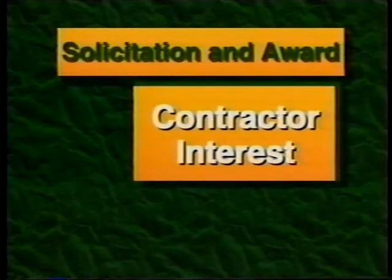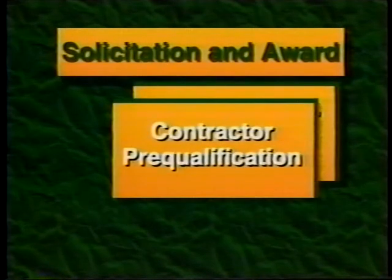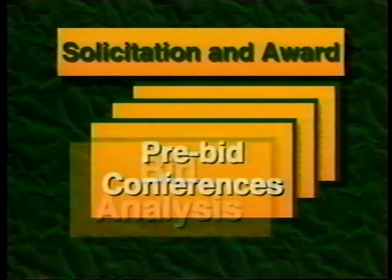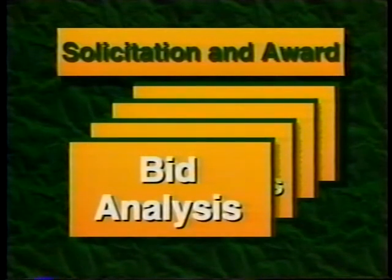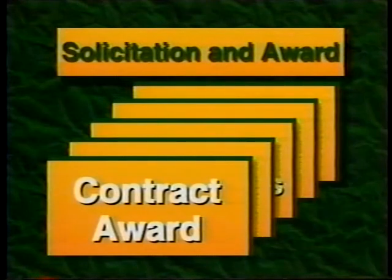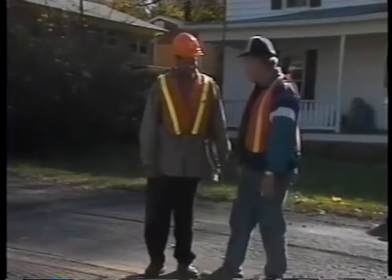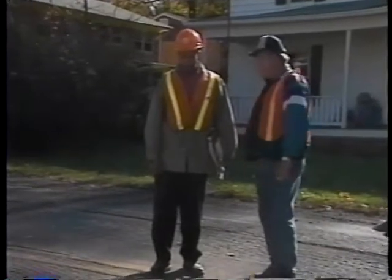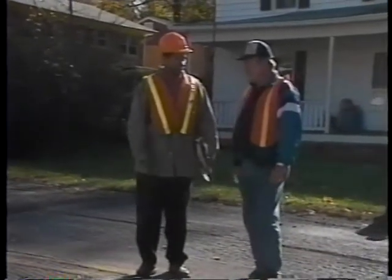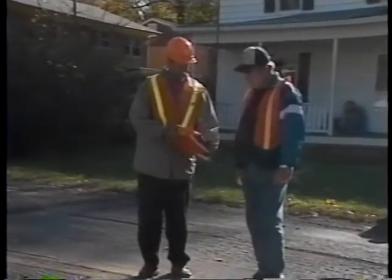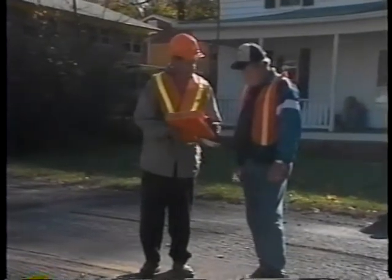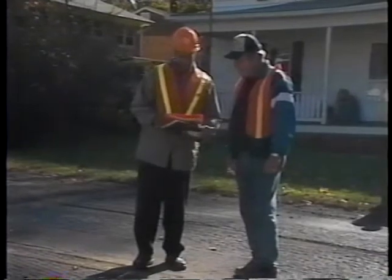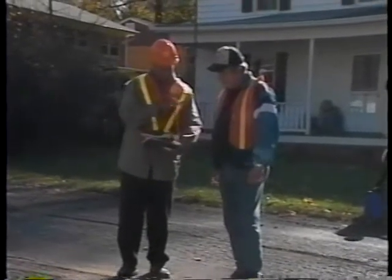The five components are: contractor interest, contractor pre-qualification, pre-bid conferences, bid analysis, and contract award. Agency personnel have many contacts with outside contractors at informal meetings, contractor association meetings, or even job sites. They should use this time to determine if there is contractor interest in a contract maintenance program.